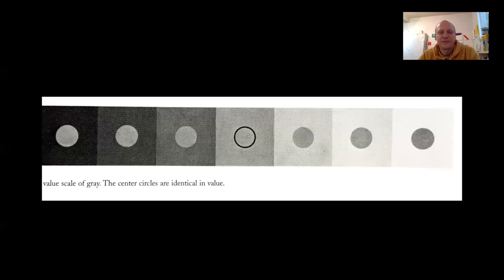This is a grayscale showing an interesting effect. We go from black on the left to white on the right. In the center, the circle is a neutral gray — it's the same gray throughout all of the squares. But on the left side, that gray looks very bright through contrast, and on the right side, that same gray looks very dark. We do an exercise based on this in both 2D design and design color class.